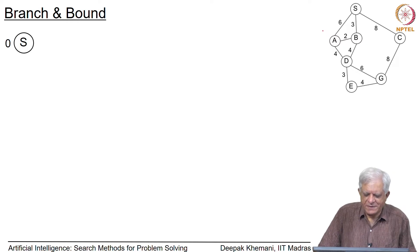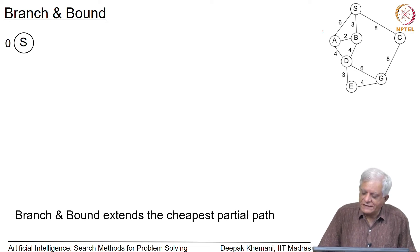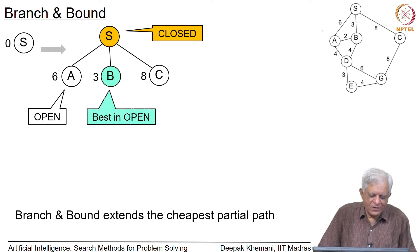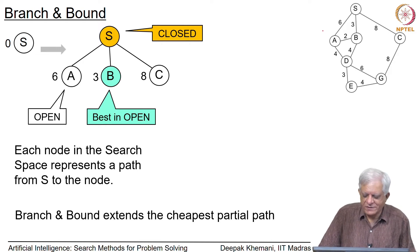Branch and bound extends the cheapest path. In our representation, the search space contains partial paths and each node in the search space is a partial path starting from s. Initially we have only the start node with cost 0. When we expand s we get its three neighbors a, b, and c with costs 6, 3, and 8 respectively. When we say the cost of a node, we mean the cost of the path from the start state to that node — in this case there is only one edge, so the edge cost becomes the cost of the node.